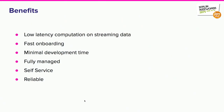The benefits of doing things this way: we enable low-latency computation on streaming data, teams that use it internally have faster onboarding, they don't need to be Java programmers, the development time is small, and there's no awareness of deployment for the user. They don't need to know how Flink runs on EC2 machines. It's self-serve and reliable.